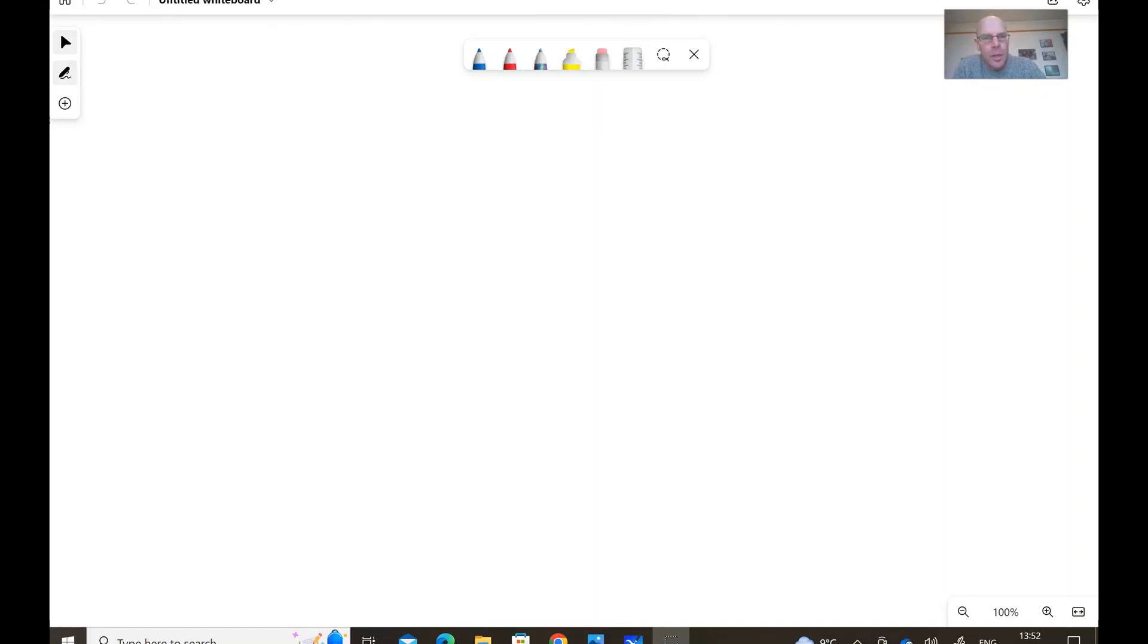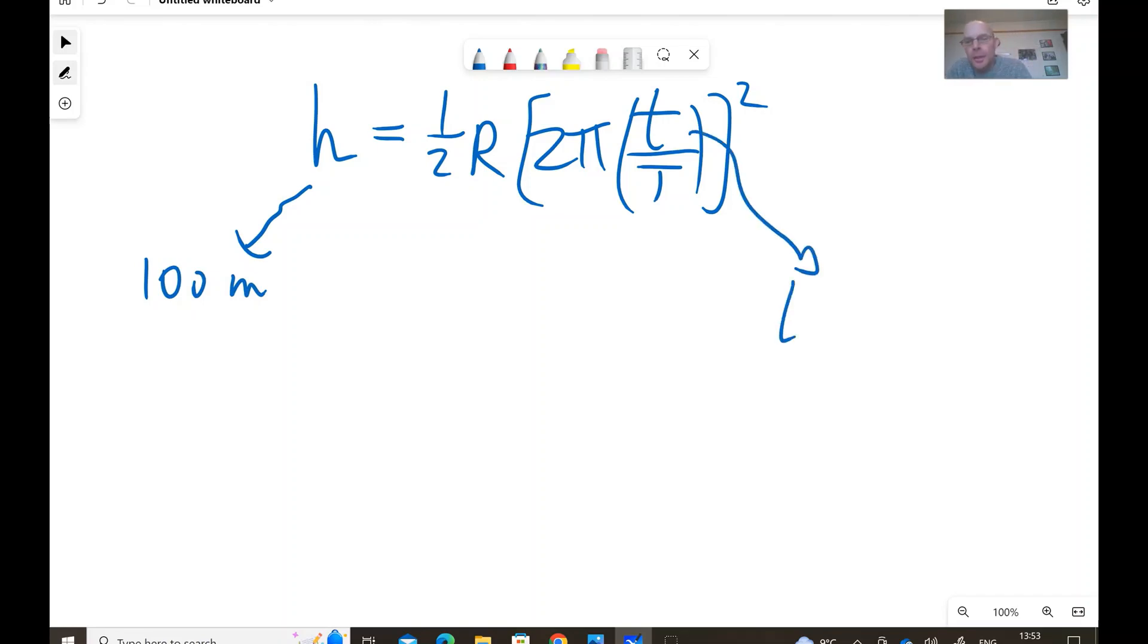The formula we had is h equals half r times 2π t over T all of that squared. Now, as I said, h is 100 meters. That was the height of the drone. So, small t was, it's an estimate, 80 seconds.